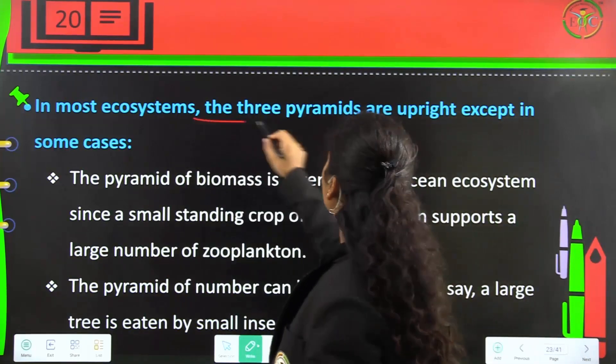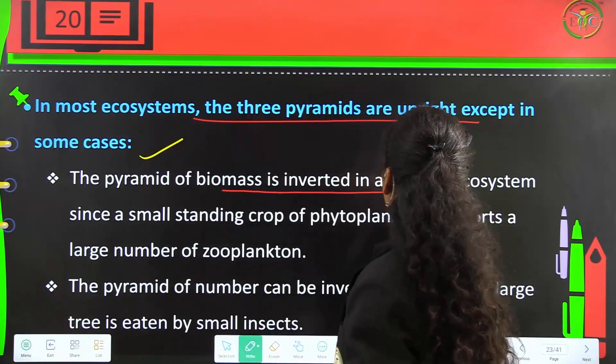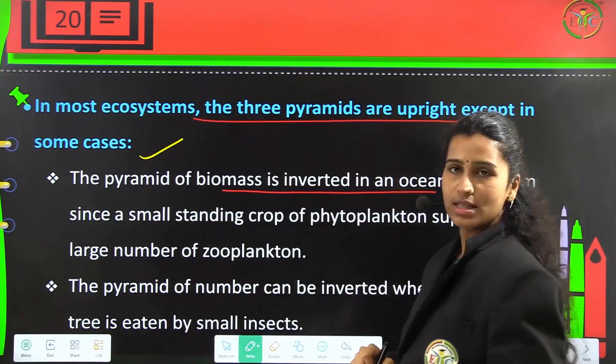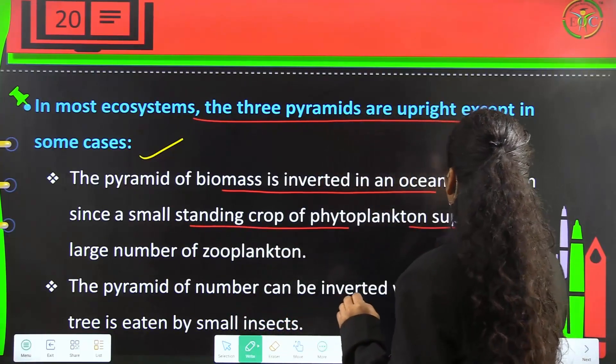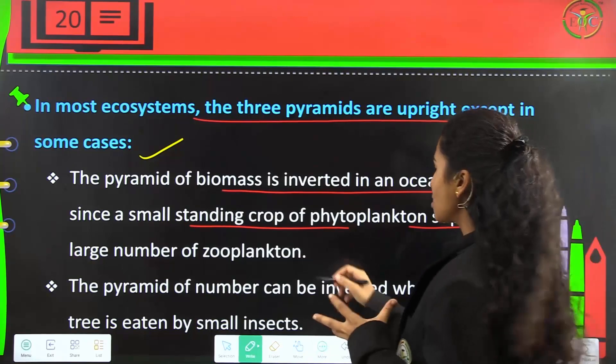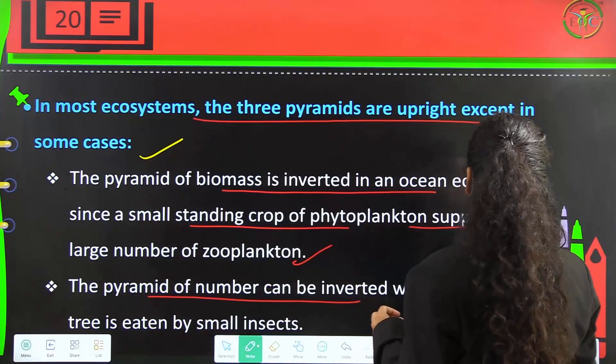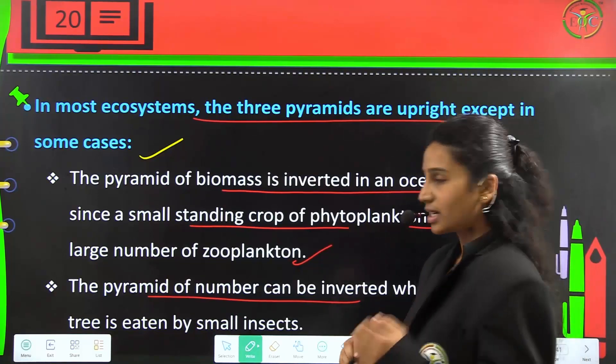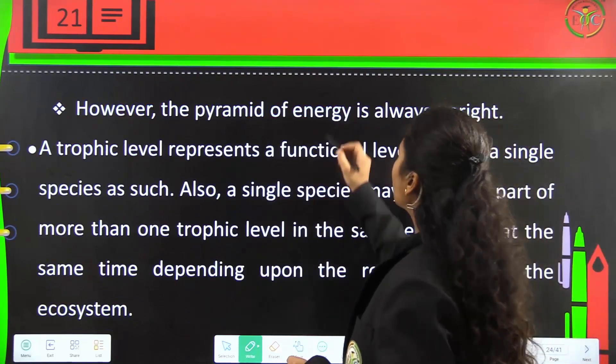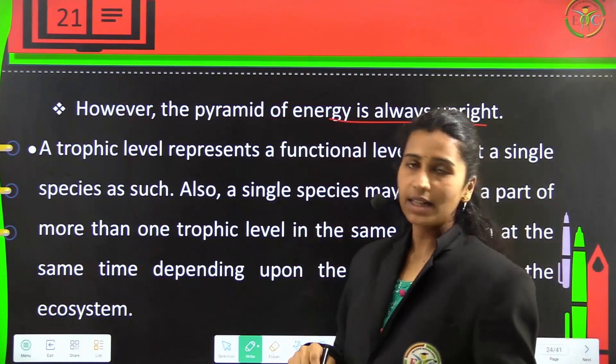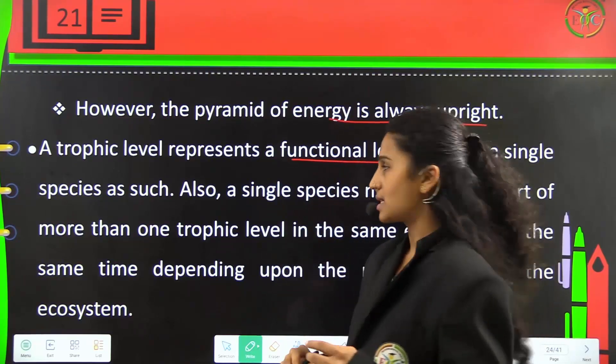In most ecosystems the three pyramids are upright, except in some cases where the pyramid of biomass is inverted in an ocean ecosystem since a small standing crop of phytoplankton supports a large number of zooplankton. The pyramid of number can be inverted when a large tree is eaten by small insects. However, the pyramid of energy is always upright.